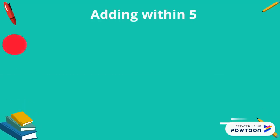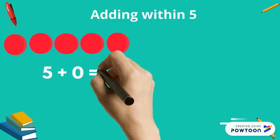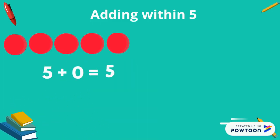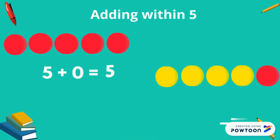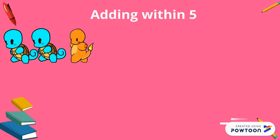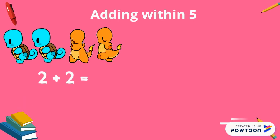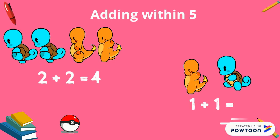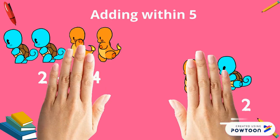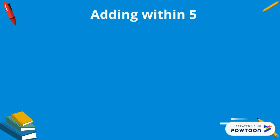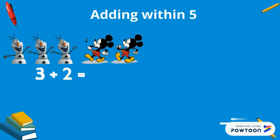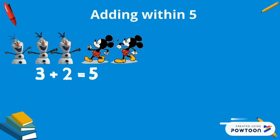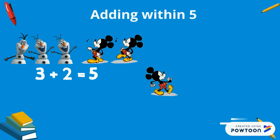Let's begin. Five plus zero equals five. Four plus one equals five. Two plus two equals four. One plus one equals two. Three plus two equals five. Two plus one equals three.